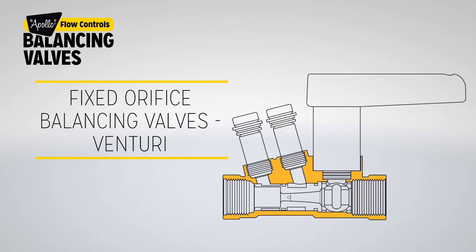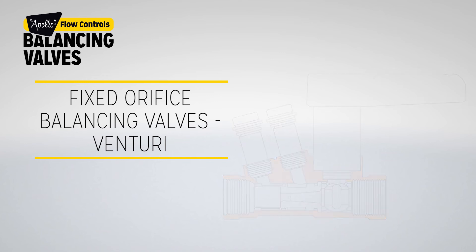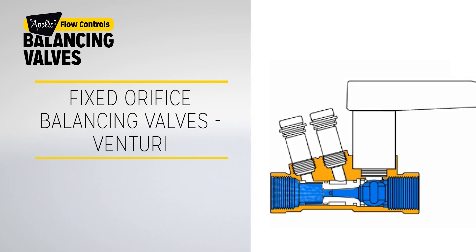Another type of fixed orifice balancing valve is the Venturi. A Venturi fixed orifice double regulating valve uses a Venturi profile instead of a flat plate orifice to generate a measurement signal. This provides less turbulence and significantly reduces pressure loss while improving signal strength.